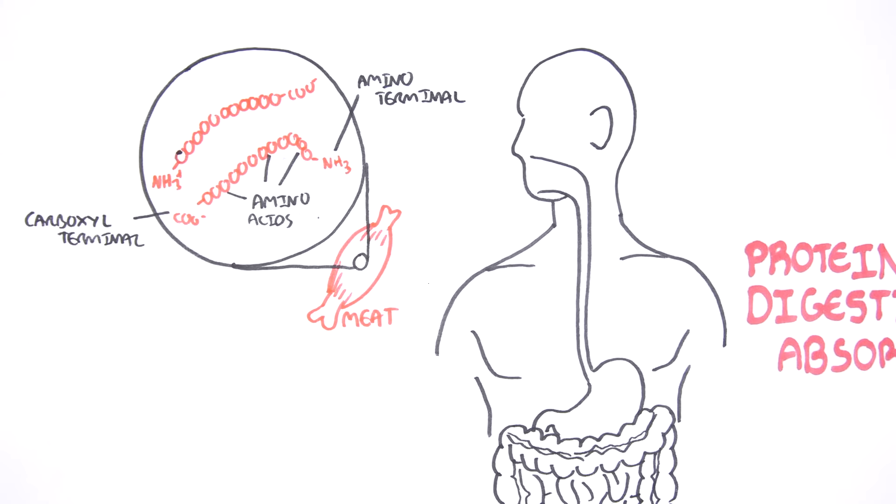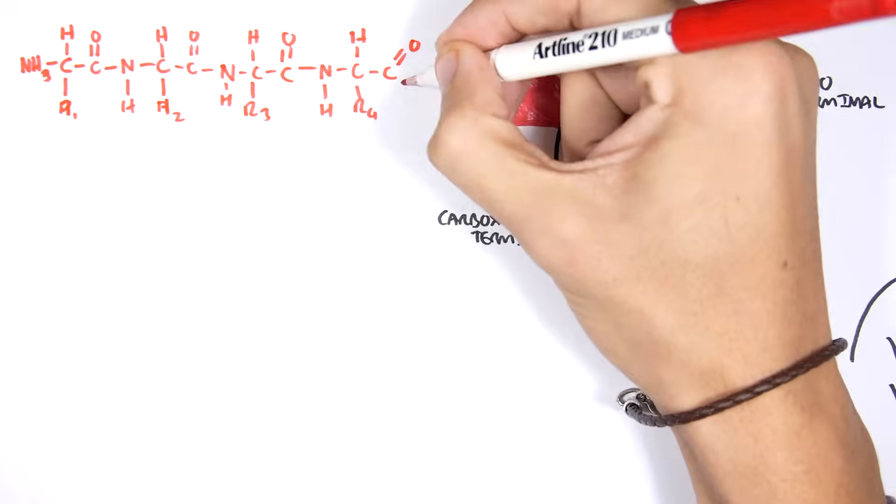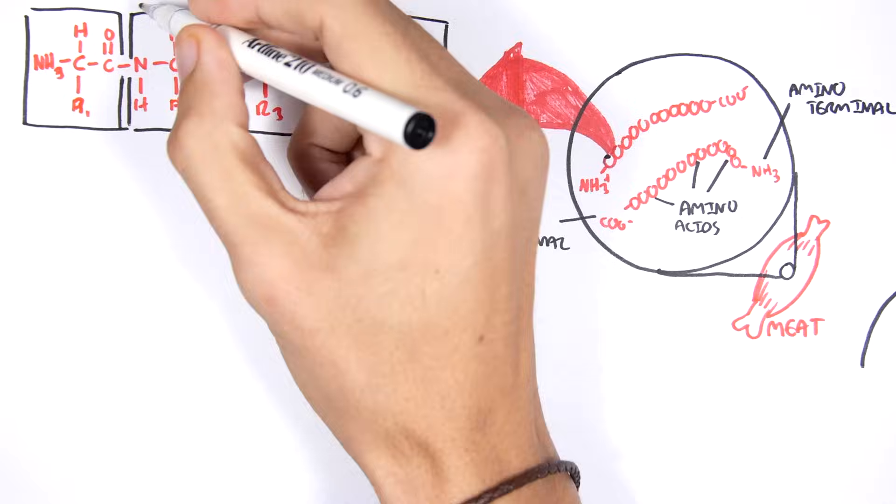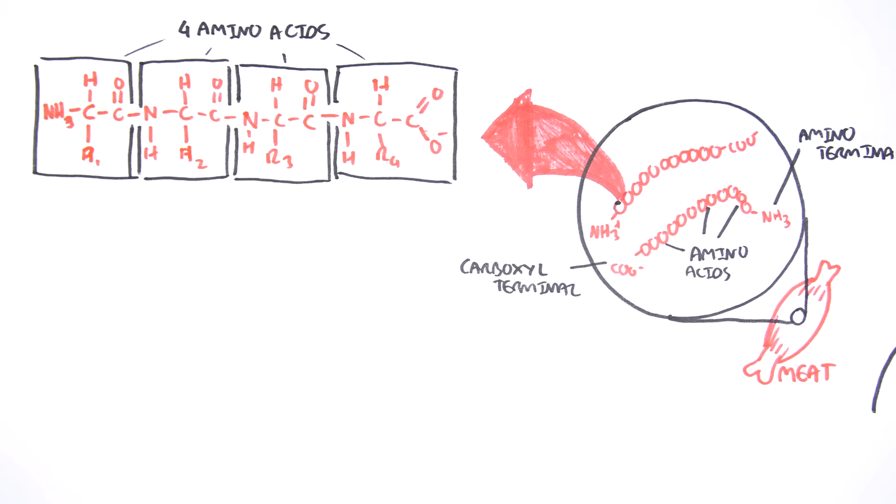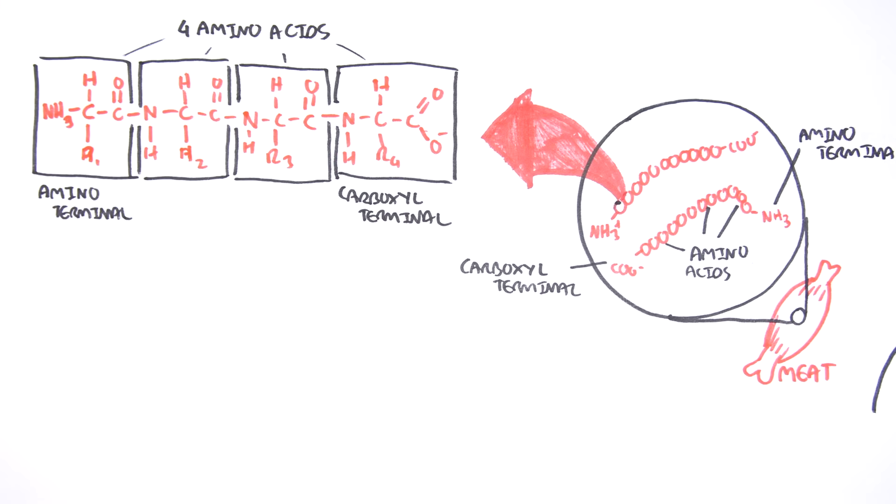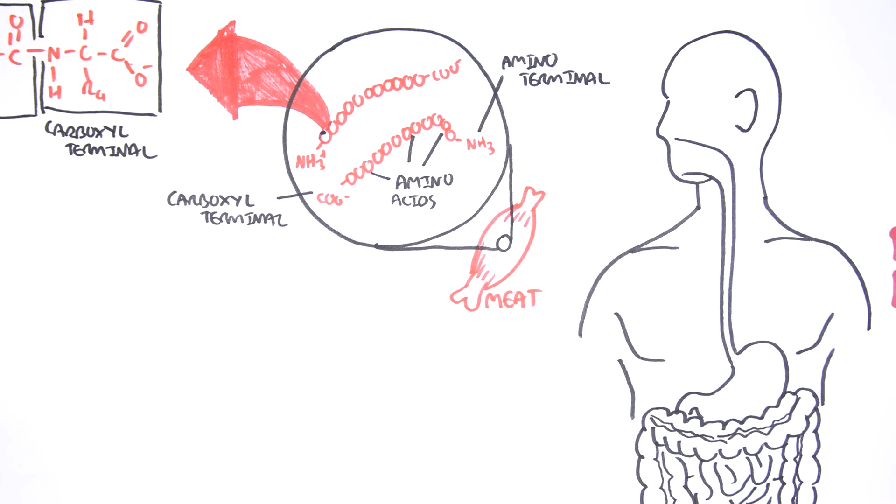If we were to look at the biochemical structure of a protein, here for example we have four amino acids linked together. Each amino acid has an amine and carboxyl group on them and it's with these amine and carboxyl groups that allow amino acids to link together. Therefore, there will always be a carboxyl group on one end of a protein and an amine group on the other end of the protein.